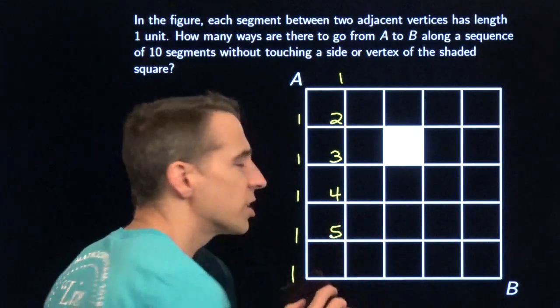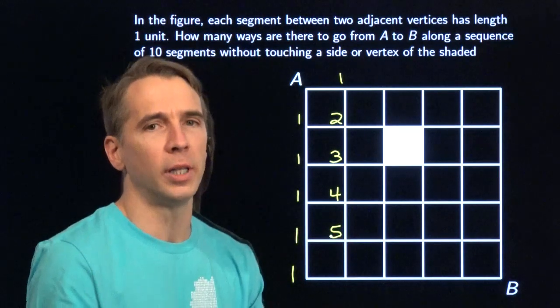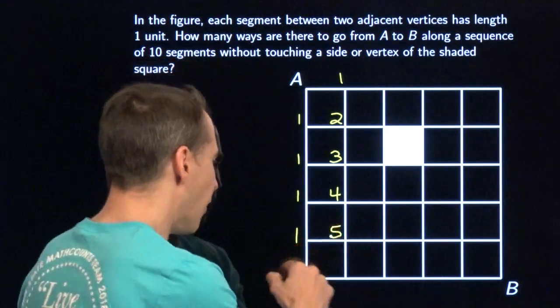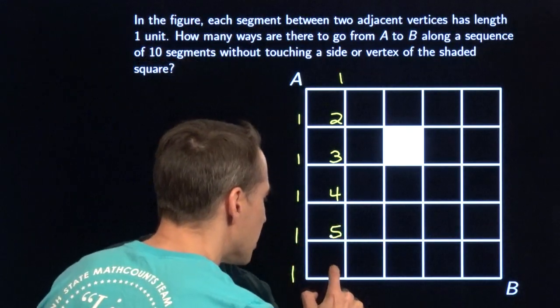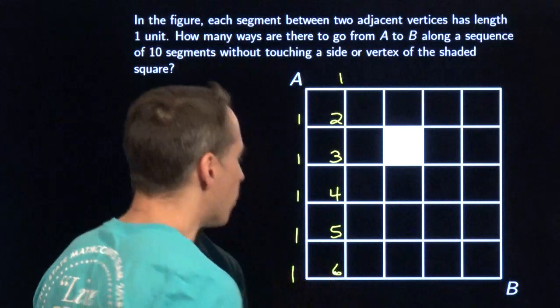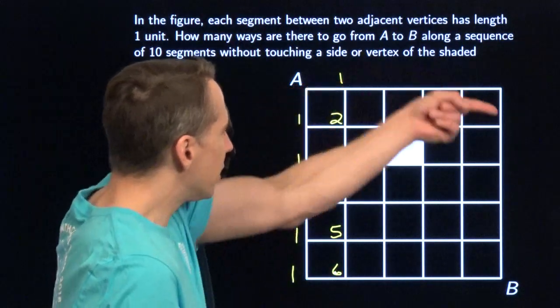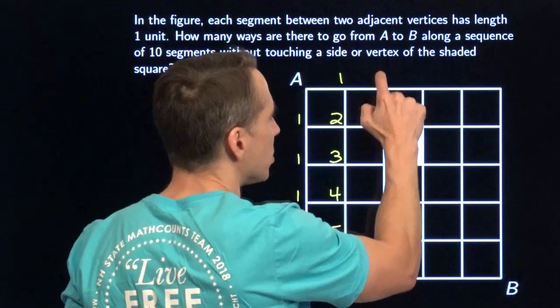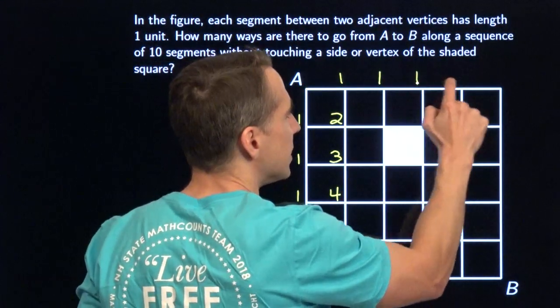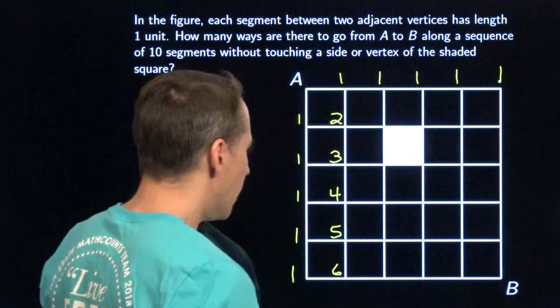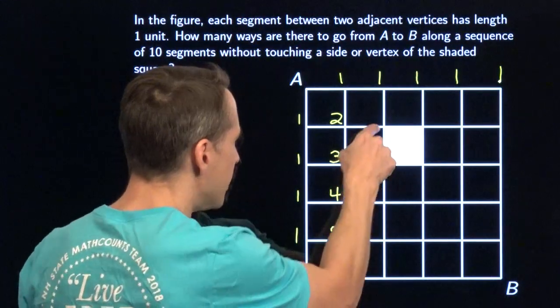We just keep going like this. Five plus one gives us six ways to get right here. Then across the top, there's only one way to get to each one of those points.